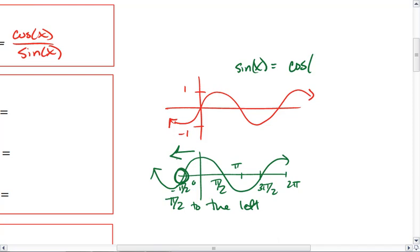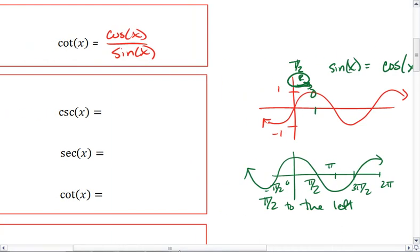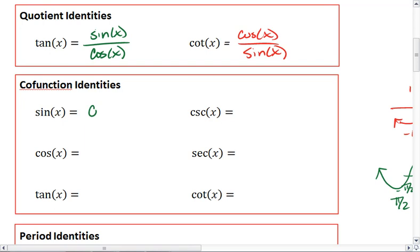We actually want to go back to our red graph and see where the cosine would start. Cosine's here, so that's a shift of pi over 2 to the right. So sine x equals cosine x minus pi over 2.